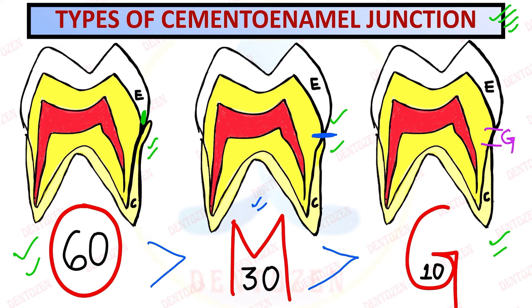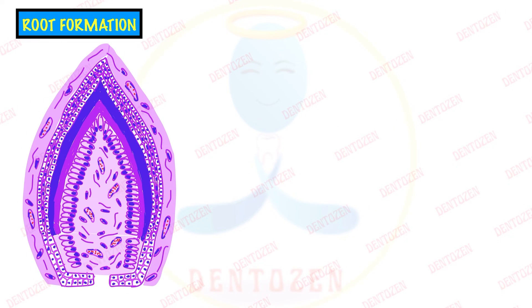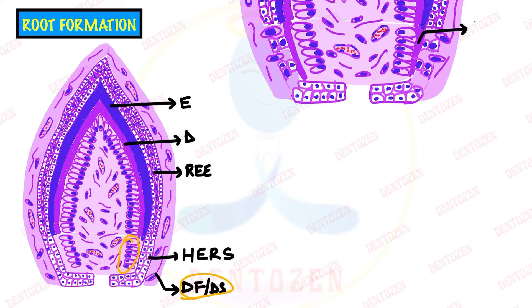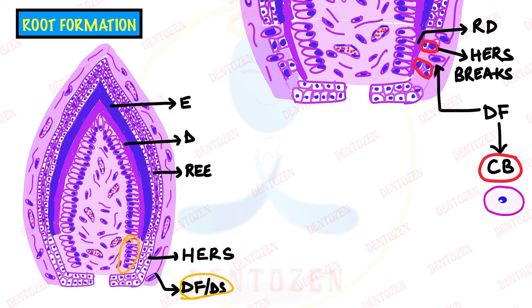To understand why there can be overlap or a gap, we need to know what happens during cementum formation, which occurs during root formation. Root formation starts once enamel and dentine are formed, reduced enamel epithelium is present, and Hertwig's epithelial root sheath (HERS) has formed. Outside that, dental follicle cells (connective tissue cells) are present. Odontoblasts form root dentine, then HERS breaks down, dental follicle contacts dentine, converts to cementoblasts, and forms cementum - that is normal.